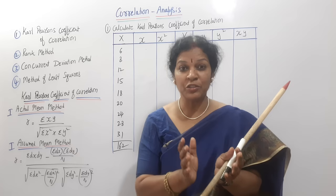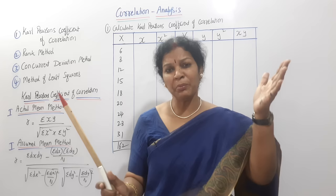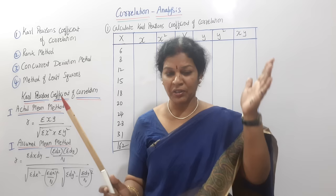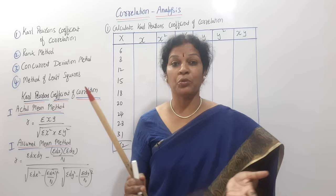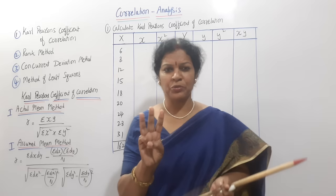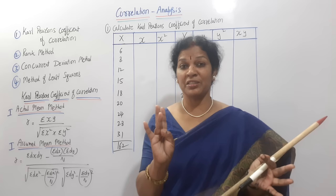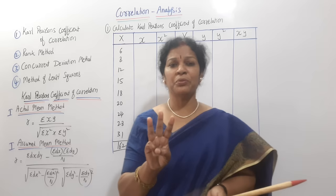For example, husband's age and wife's age — one variable each, 10 husbands and 10 wives. How is the correlation? Is it good, bad, or negative? Correlation analysis has three parts: positive correlation means there is a good correlation, negative correlation means negatively there is a correlation, and zero correlation means no correlation at all.